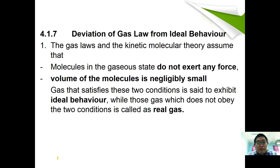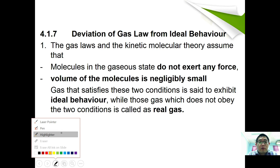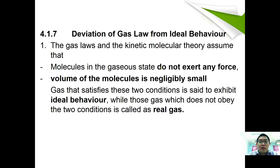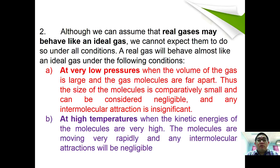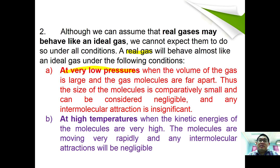Next, we look at deviations of real gases from ideal behavior. The ideal gas law and kinetic molecular theory assume: first, molecules in the gaseous state exert no attractive or repulsive forces; and second, the volume of the molecules is negligibly small. Gases satisfying these two conditions exhibit ideal behavior. Real gases can behave almost like ideal gases at very low pressure, where molecules are far apart, intermolecular forces are insignificant, and molecular size is negligible.